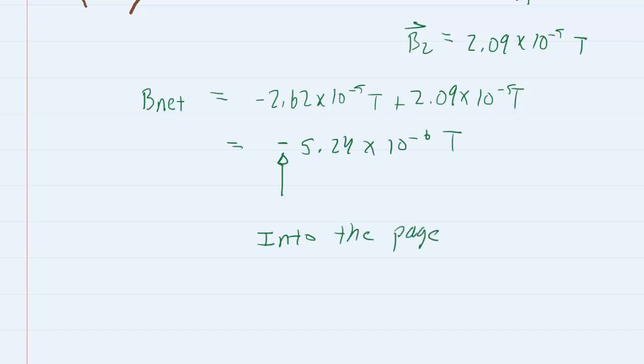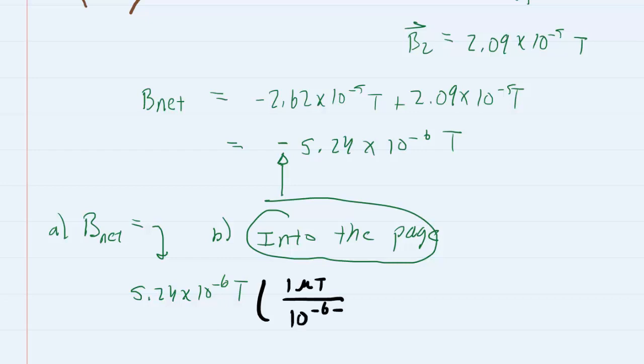That's an important thing to understand. That's actually the answer to part B, that the net magnetic field will be into the page. For part A the magnitude of the net magnetic field will just be 5.24 times 10 to the negative 6 Tesla. If you need to convert that into micro Tesla then you say that 1 micro Tesla is 10 to the minus 6 Tesla. Setting it up in this manner cancels out the Tesla and the 10 to the negative 6, so you should be left with a final answer of 5.24 micro Tesla as the magnitude for part A.